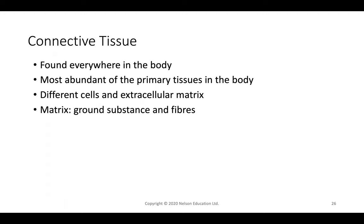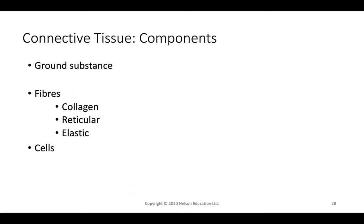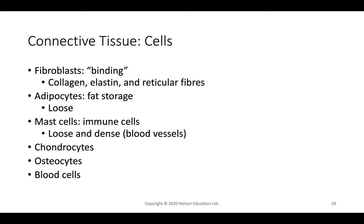Connective tissue is the most abundant tissue in the body, found everywhere. It has multiple types of cells as well as an extracellular matrix comprised of strong biomolecules like elastin. Inside the matrix is a ground substance — like hyaluronic acid — and fibers including collagen fibers, reticular fibers, and elastic fibers. Its functions include support, protection, transport, energy storage in adipose tissue, and immune defense.